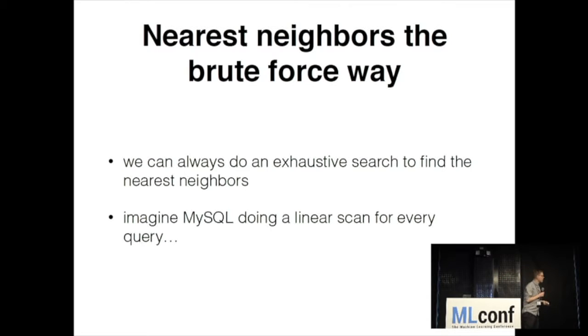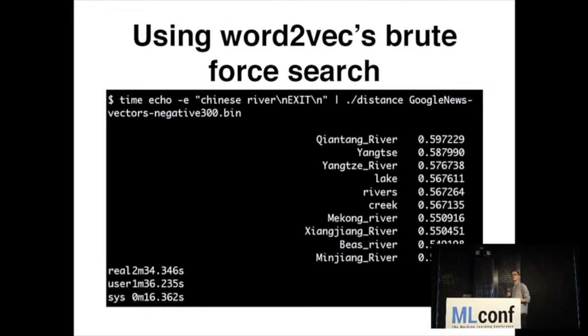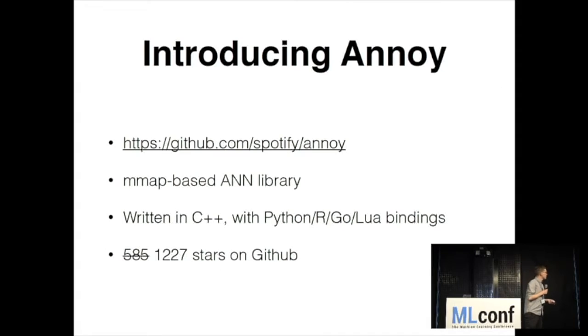So enough about vector models. How does it work? How do you... So there's a lot of examples where you get these vectors, and then you have this high-dimensional space, and you want to find nearest neighbors. And how do you do that? Naively, we can obviously brute-force search. Linearly scan the dataset. We have a query point. We scan over all the points, and we find the ones that are closest. Which is kind of slow. So Word2Vec actually comes with a tool to do this. We put in Chinese River. It outputs a bunch of Chinese Rivers. And it takes 2 minutes and 34 seconds on my laptop.